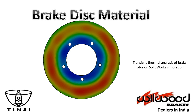So before moving into the materials, let us first discuss the brake rotor as a system of the vehicle and what it actually does. The image we are seeing in front of us is the transient thermal analysis of a brake rotor on SOLIDWORKS Simulation. As you can see, a red circular ring is formed on the brake rotor, which shows the area that comes in direct contact with the brake pads.